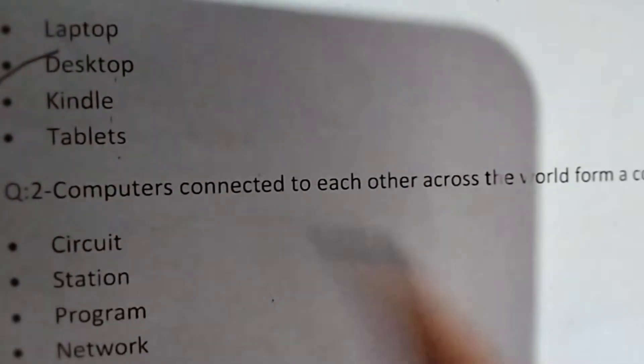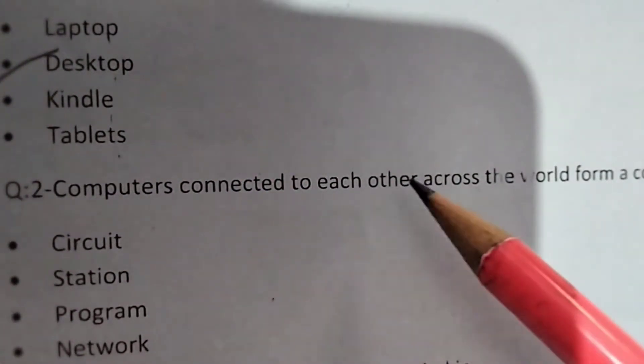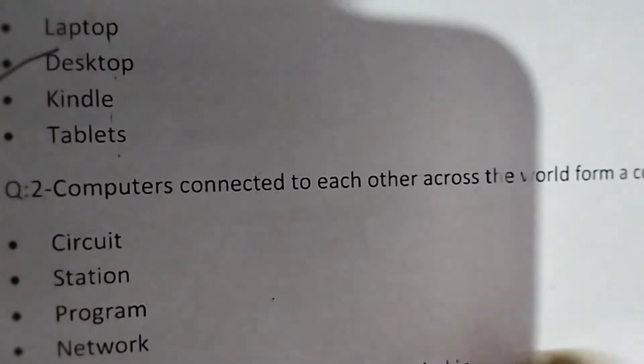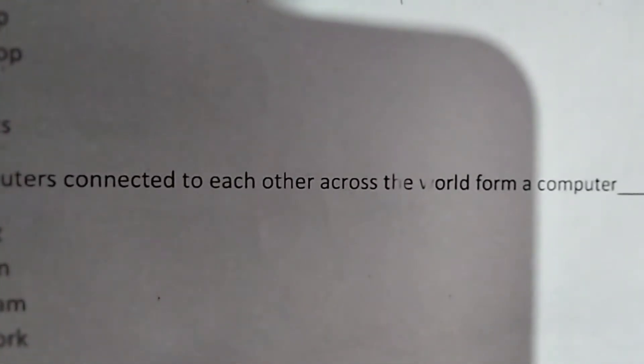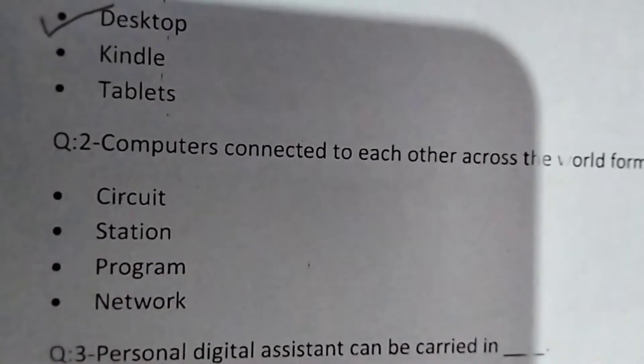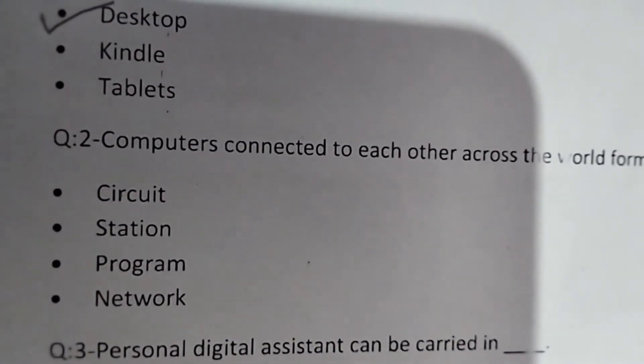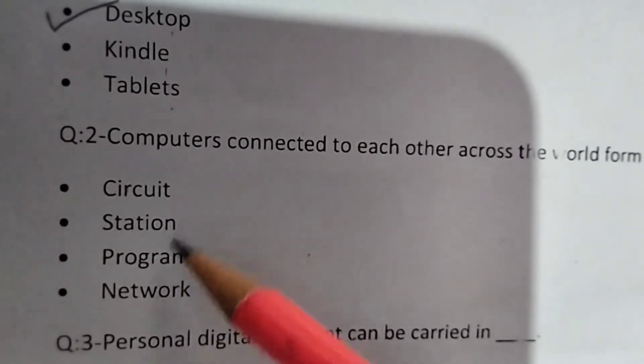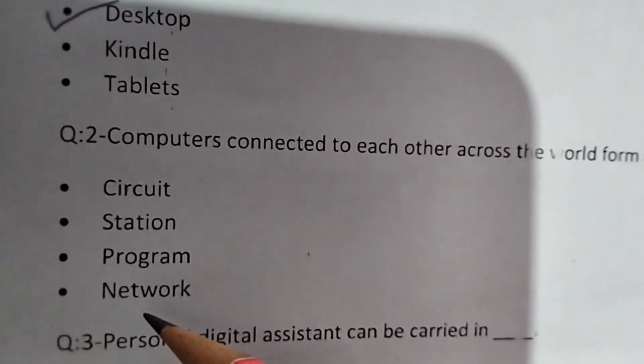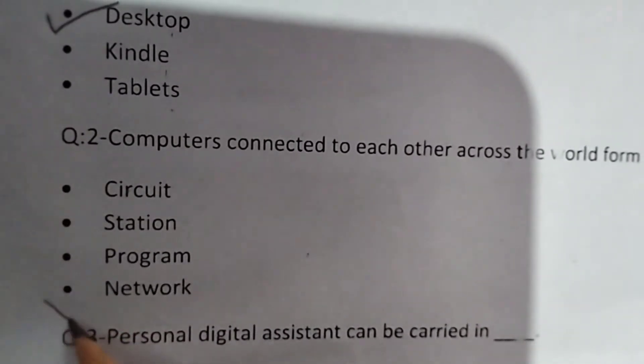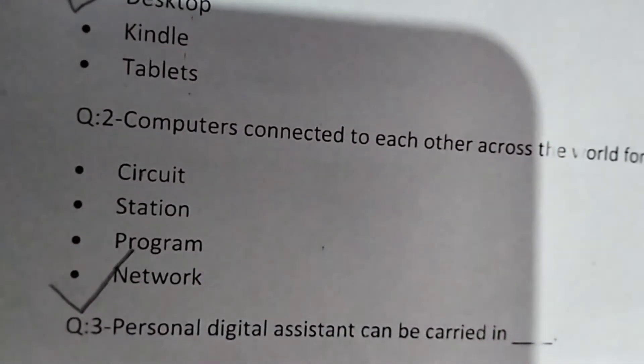Second question is: Computers connected to each other across the world form a computer blank. When computers are connected to each other, what is formed? Circuit, station, program, network. The answer is network. So tick the correct answer, network.